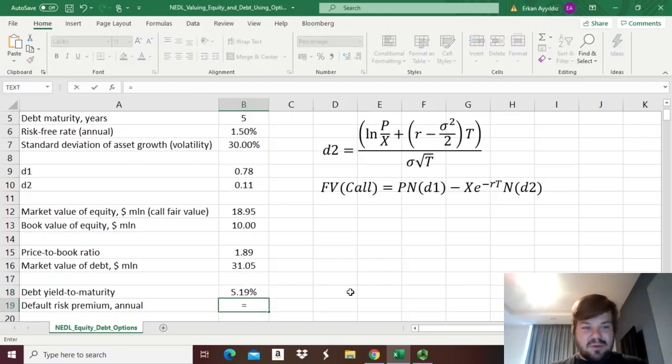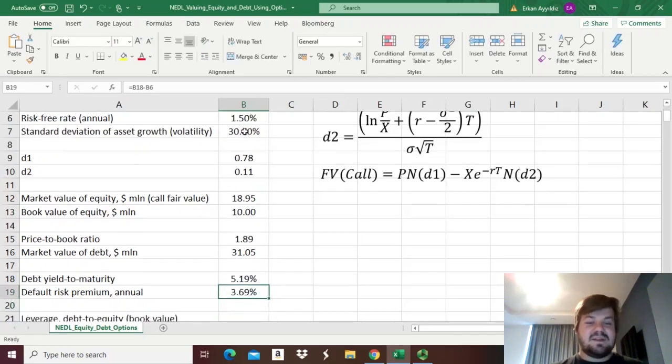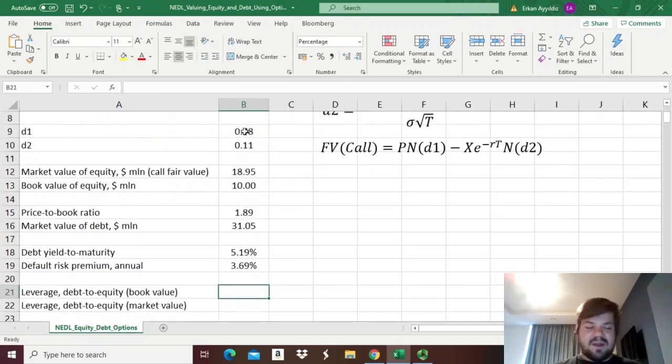So, we see that the yield to maturity of this company's debt is 5.19%. So, as we know the risk rate as well, we can figure out that the default risk premium for this company is 3.69% per annum.